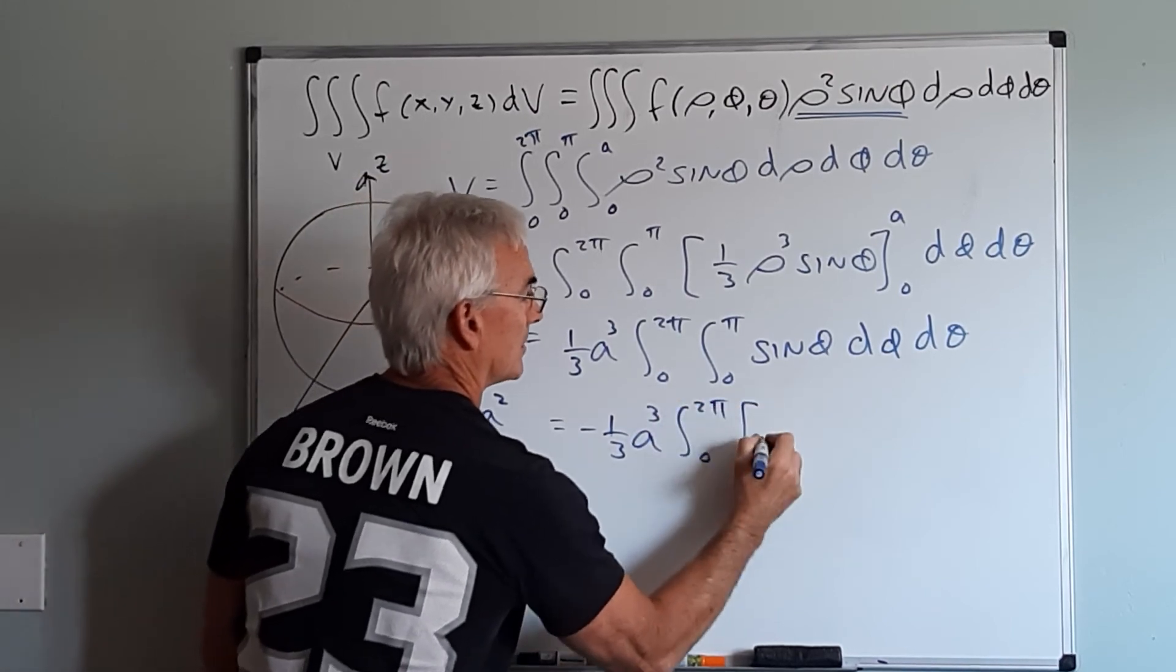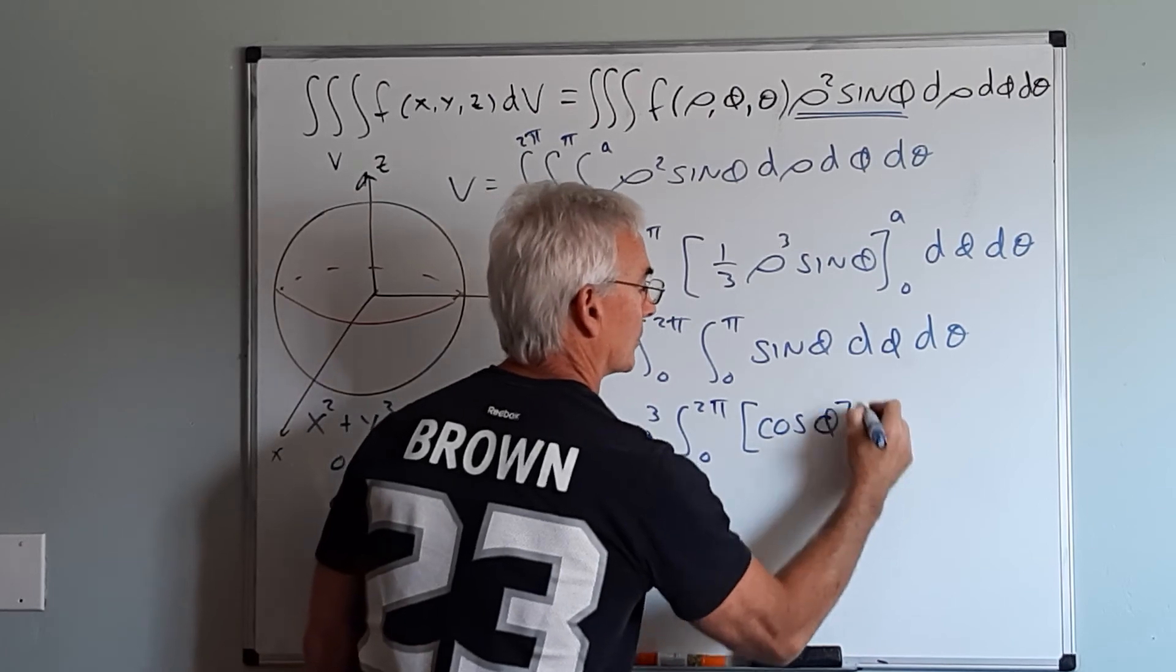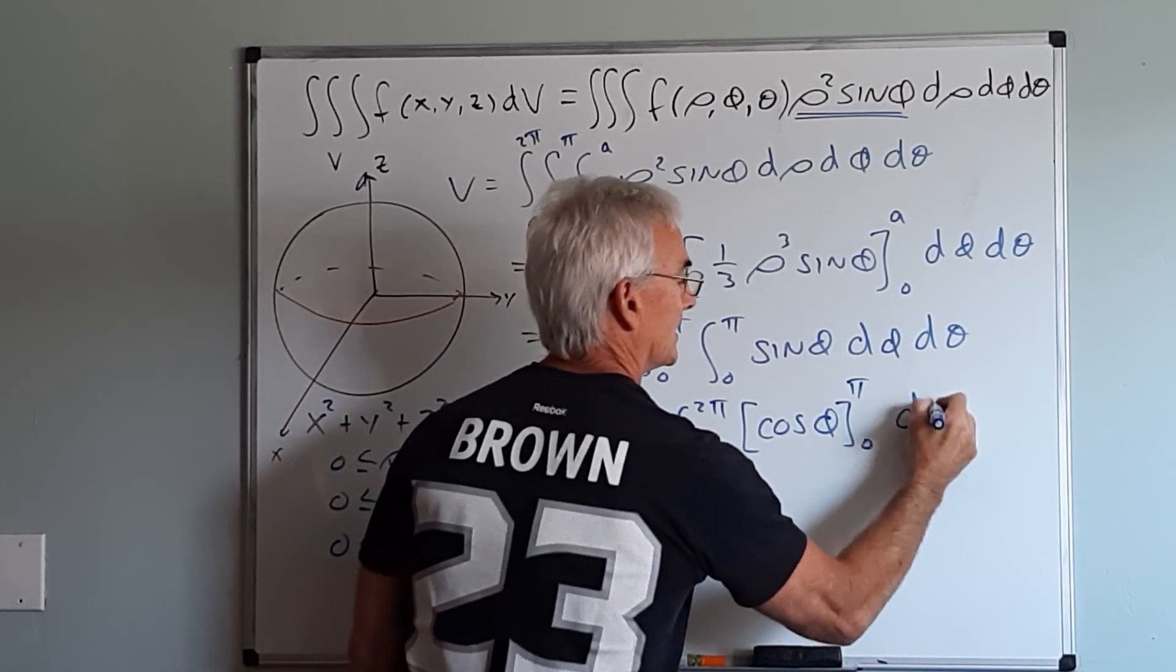so we'll have negative a third A cubed, 0 to 2 pi, cosine of phi from 0 to pi, d theta.